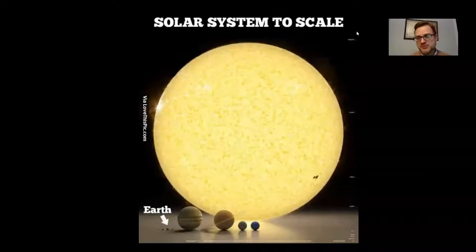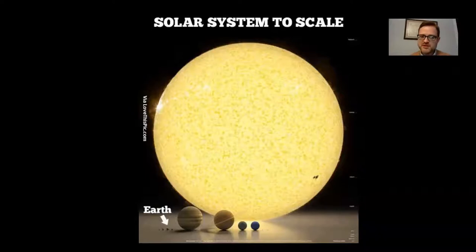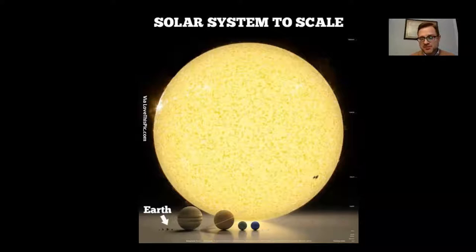Hello, astronomy. Welcome to our first video lecture for Unit 4, the solar system. We're going to have three videos for this unit. The first video is going to be on the inner planets, the second video on the outer planets, and the third video on other objects in the solar system.